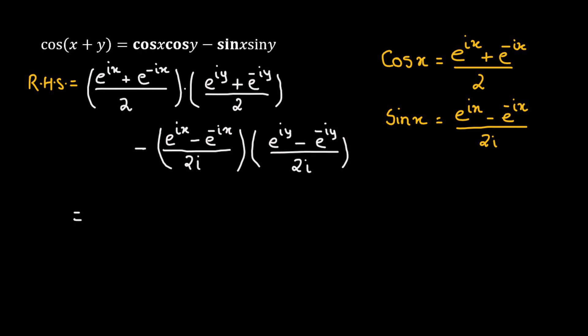The 2 and 2 in the denominators get multiplied, so we write one quarter as a common factor and multiply out the first two terms. e raised to the power of ix gets distributed with e raised to the power of iy plus e raised to the power of negative iy.